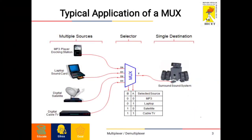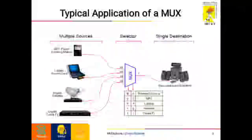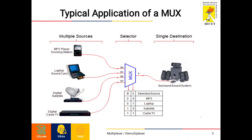A typical application of a multiplexer: it can have multiple sources, a particular number of select lines, and a single destination. For example, in a surround sound system, the input signals can be an MP3 player, laptop, digital satellite, and digital cable TV. The select lines depend on the number of inputs and outputs.